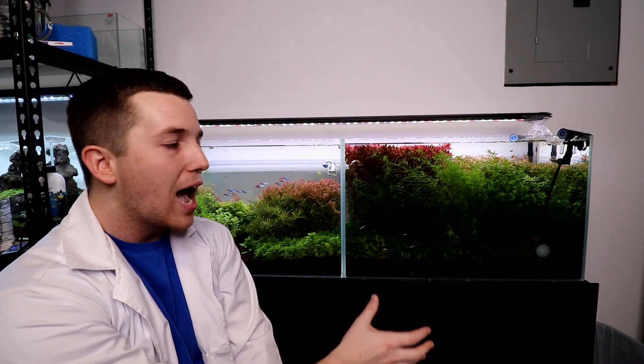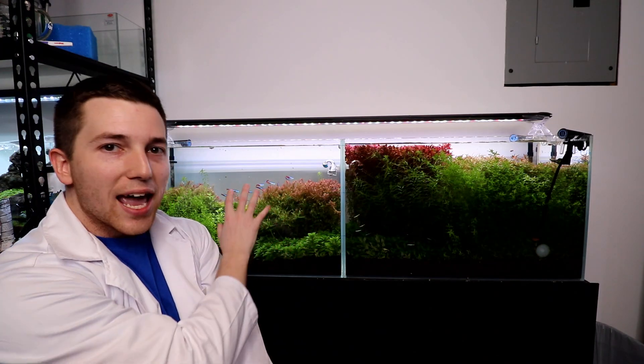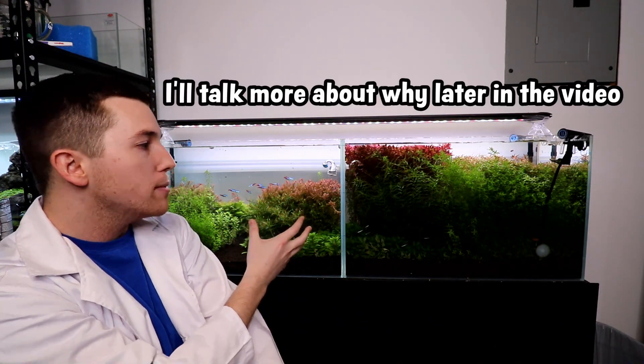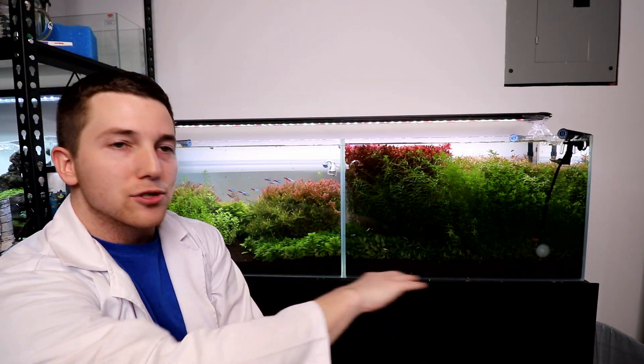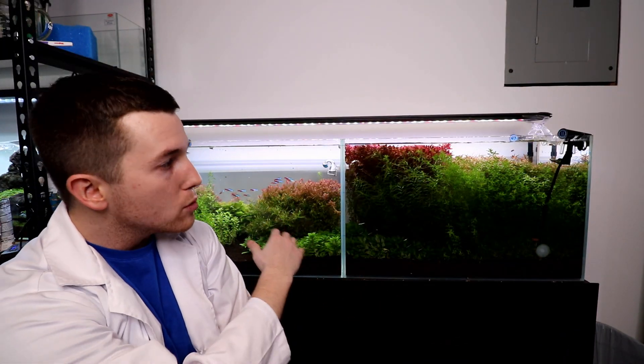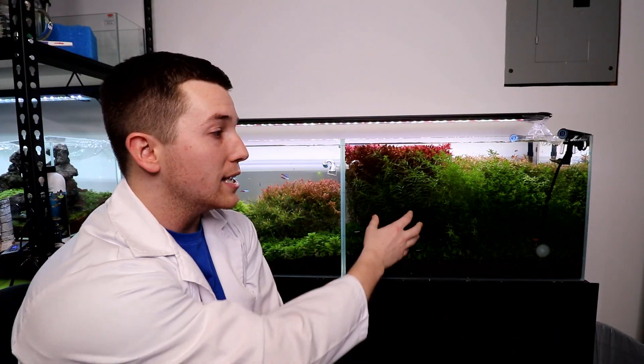Both aquariums got exactly 0.2 grams of fish food per day for a 30-day period. You're now looking at these two tanks roughly 60 days in. I just wanted to see what this tank would do a little bit longer term, and nothing really big happened or anything crazy. So we're about to start our third experiment here now, but I just wanted to show you guys what happened.